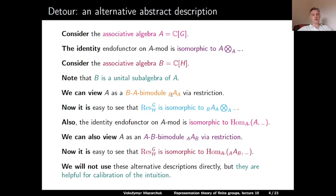Alternatively, the identity endofunctor on A-mod is isomorphic to taking homomorphisms from the regular AA-bimodule A to anything. We can view this AA-bimodule A also as an AB-bimodule, where the right action of B is given by restricting the action from A to B. Similarly, the restriction functor is isomorphic to the functor of taking homomorphisms from this AB-bimodule A. We will not use these alternative descriptions directly, but they are quite helpful for understanding the intuition behind what we are doing.